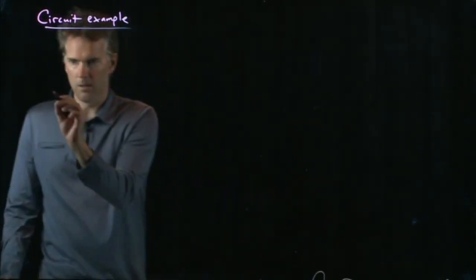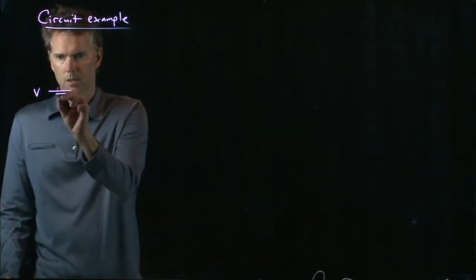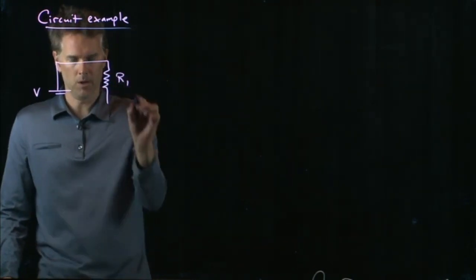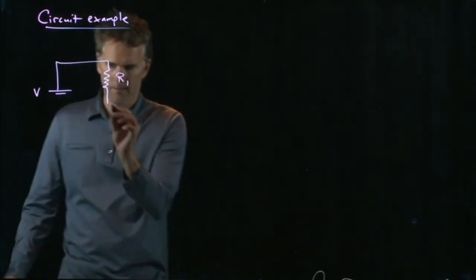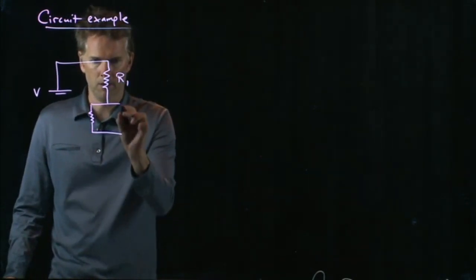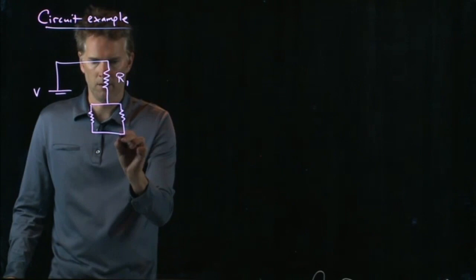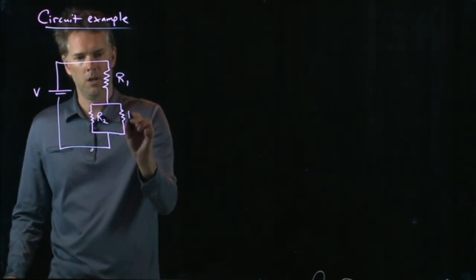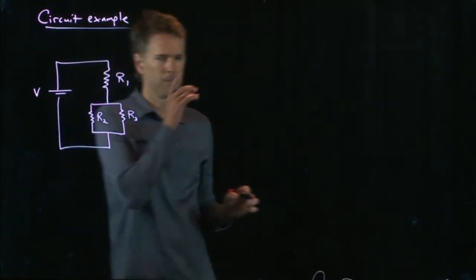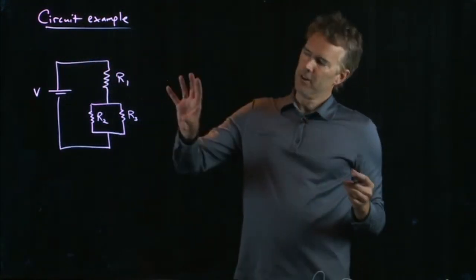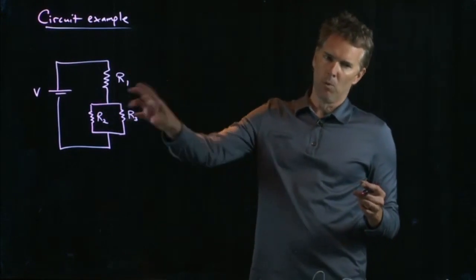Let's say we take a battery V, we have resistor R1, and then we're going to have two resistors in parallel, R2 and R3. And the goal is to simplify this to just a battery and one resistor.